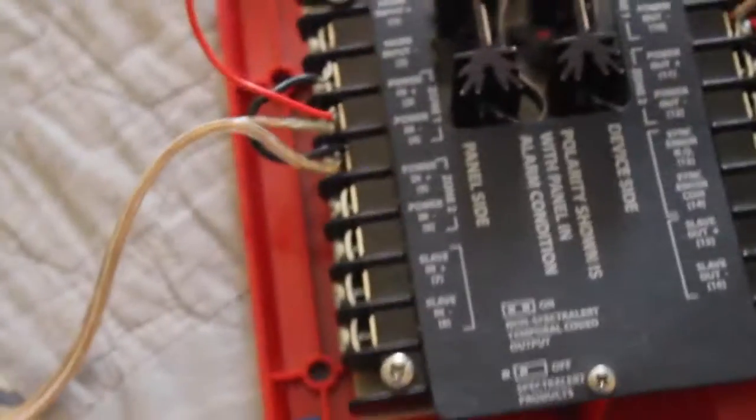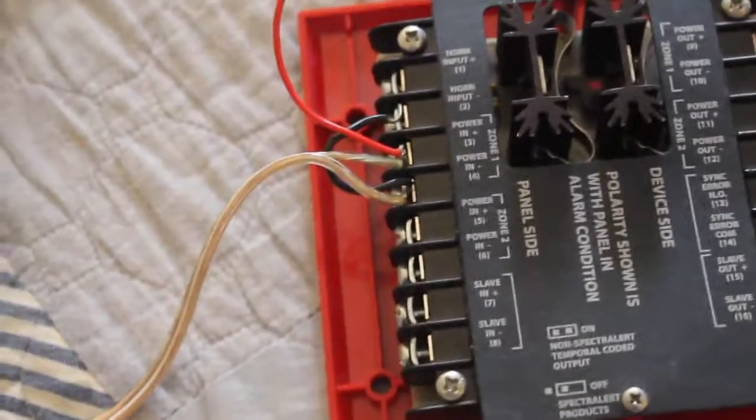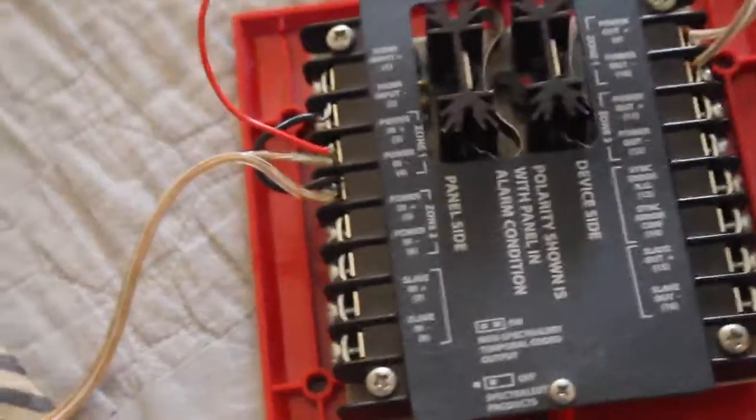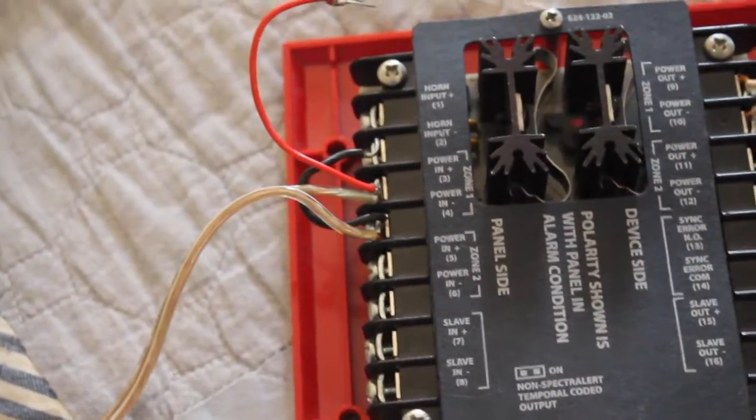However, this is just a basic two-wire panel. They go off anyways when you hit the silence button. Both of them just shut off, so there's really no point in trying to wire it four-wire in this case.